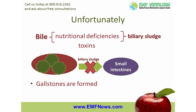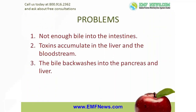Gallstones and biliary sludge disrupt the normal flow of bile, causing three different types of problems. The first set of problems is related to not getting enough bile into the intestines. The second set occurs when toxins, unable to leave the body through the bile, back up and accumulate in the liver and the bloodstream. The third set occurs when the bile, unable to get into the intestines, backwashes into the pancreas and liver.